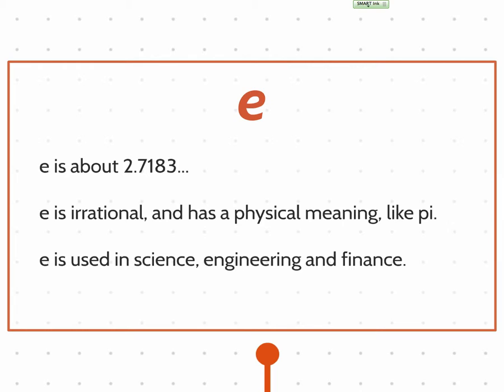E is used in science, engineering, and finance. Probably the biggest thing for you to know about e is it works exactly like any other base. So all those exponent rules we've been talking about are exactly the same here. We can write different numbers with a base of e, we can solve equations that have a base of e. It's all the same.